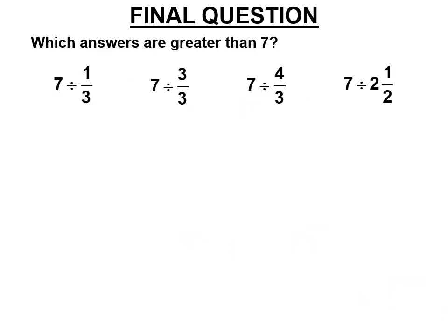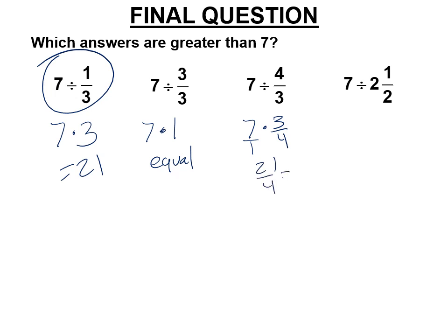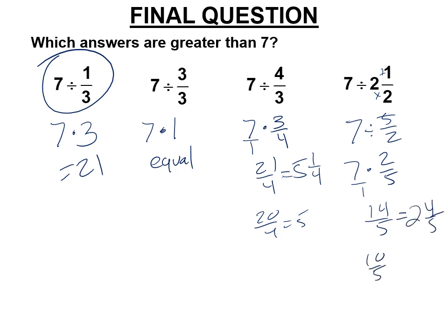Which answers are greater than 3? So there could be more than 1. Well, you can do the math. That's the easy way. 7 divided by 1, there's 7 times 3, 21. So definitely that one. Circle the original one. 7 divided by 1 is the same as 7 times 1. That is not greater. That's equal. And so we're not circling that one. 7 divided by 4 thirds is the same as 7 times 3 fourths. You can't cancel. That's 21 fourths. 20 fourths is 5. So this is 5 and 1 fourth. Is that greater than 7? No, it's less. And then 7 divided by 2 and 1 half. 7 divided by 2 times 2 is 4 plus 1. Divided by 5 halves. 7 times 2 fifths is 14 fifths. 10 fifths is 2. So it's 2 and 4 fifths. So which ones were greater than 7? Only the first one.